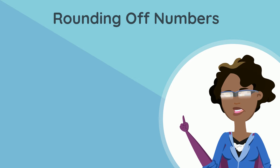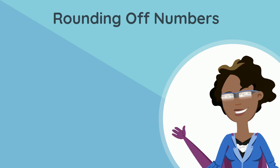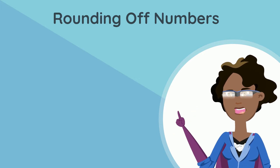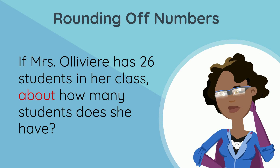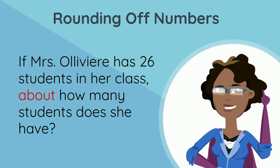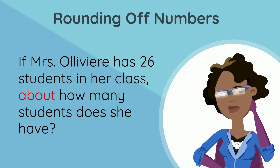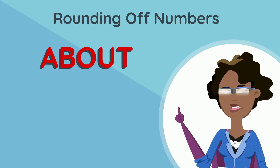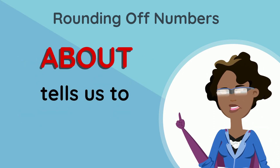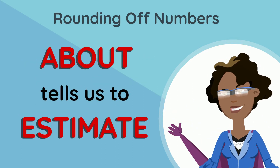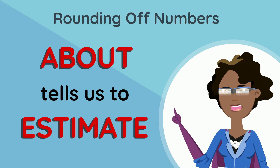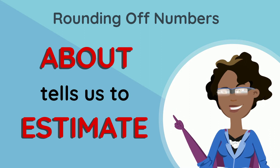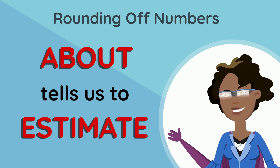You may have seen this example before, but let's revisit it. If Mrs. Oliveri had 26 students in her class, about how many students does she have? The word 'about' tells us we have to estimate how many students are in her class, or in other words, round off to the nearest 10.